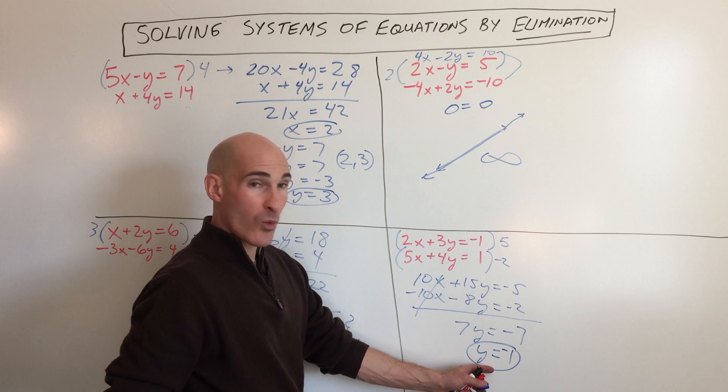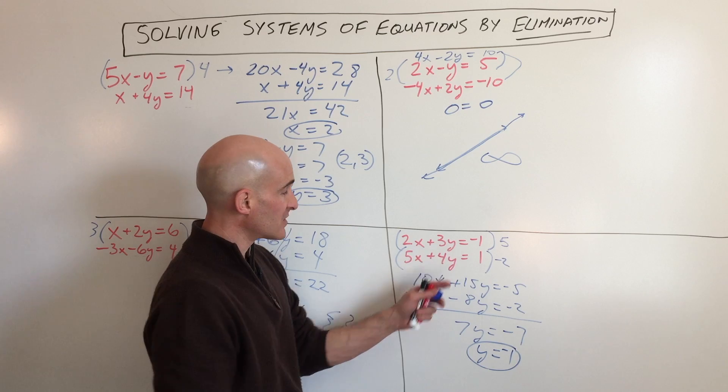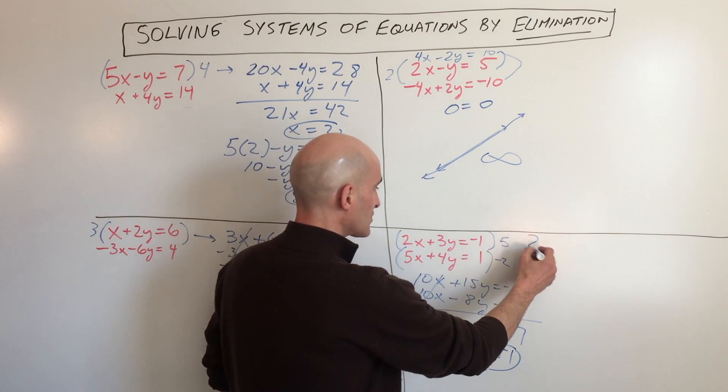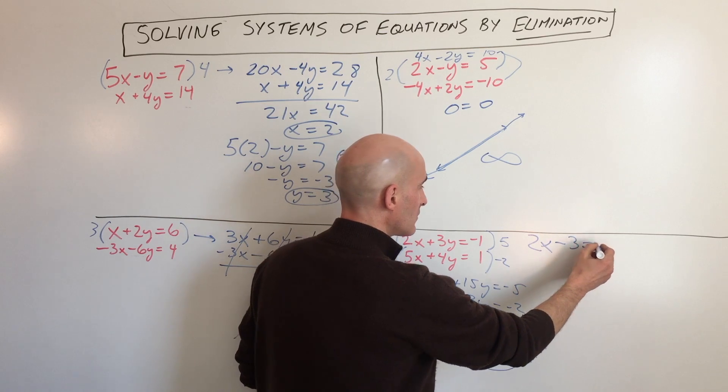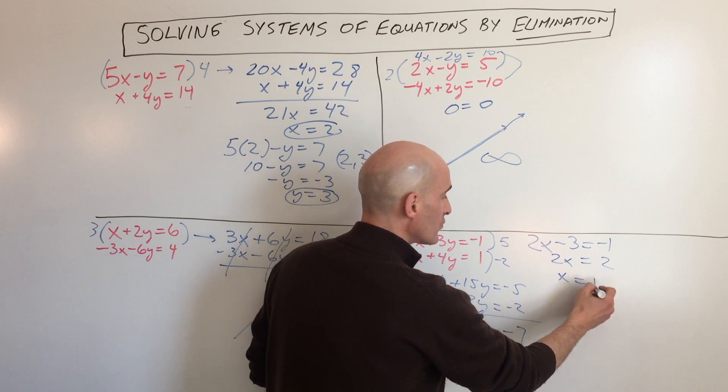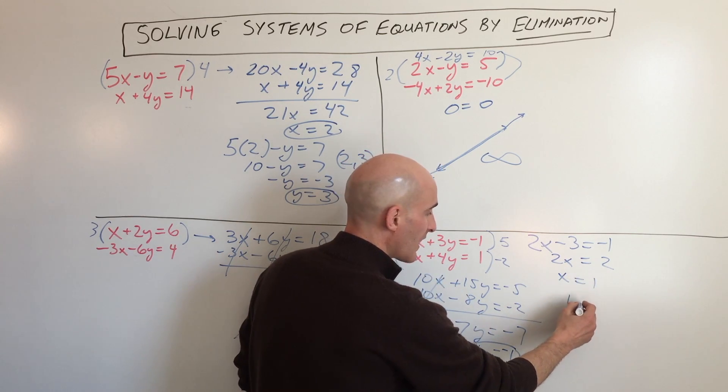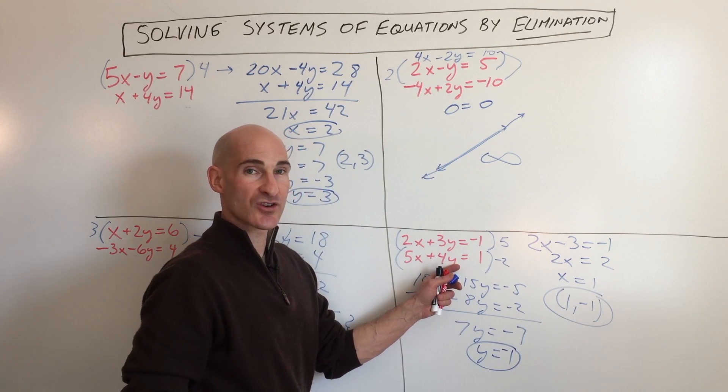So now we know what y equals. If we put it back into this equation or this equation, we'll get the same answer. Let's just put it into the top equation. So that's going to give us 2x. 3 times negative 1 is negative 3. Add the 3 to the other side, we get 2. And divide by 2, x equals 1. So our solution is 1, negative 1. And that's where these two lines are going to intersect.